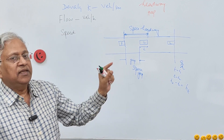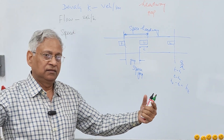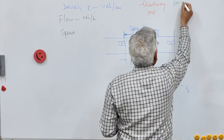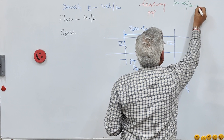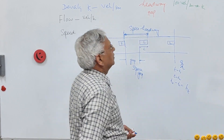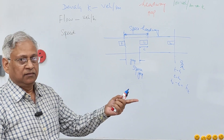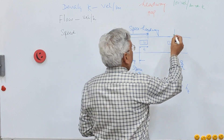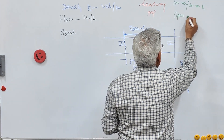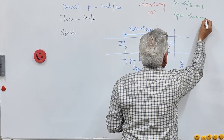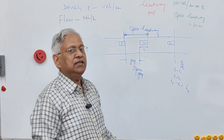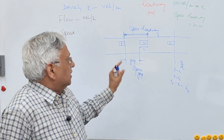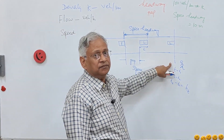If there are 100 vehicles in 1 kilometer, the average spacing is 10 meters. This 100 vehicles per kilometer is the density. The inverse of density gives the space headway — 10 meters between two vehicles. So density is the inverse of space headway. Similarly, flow is the inverse of time headway.